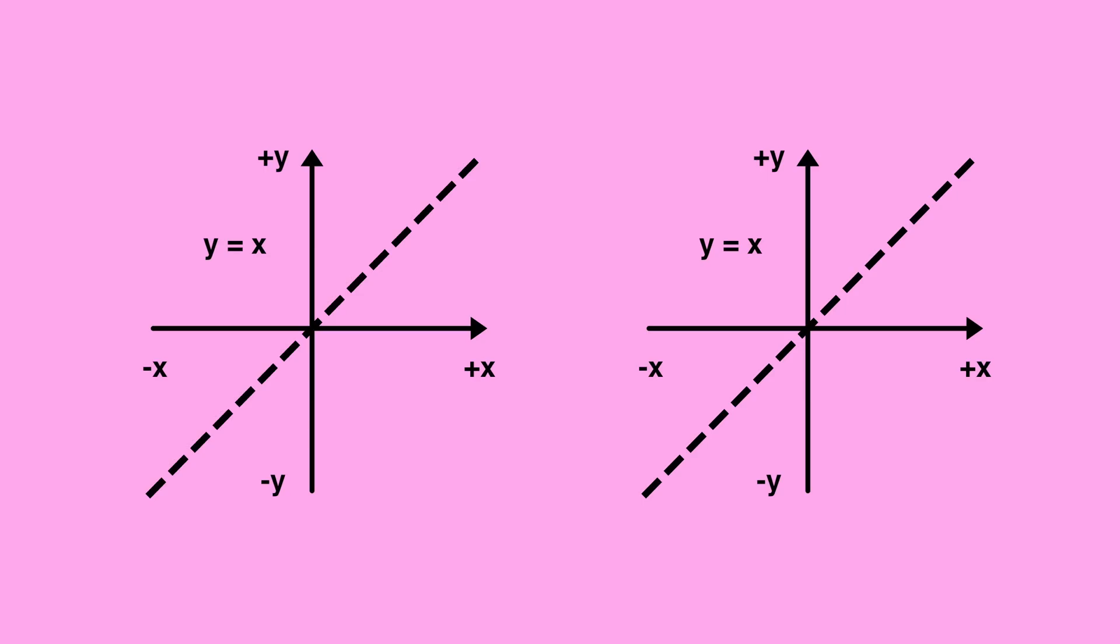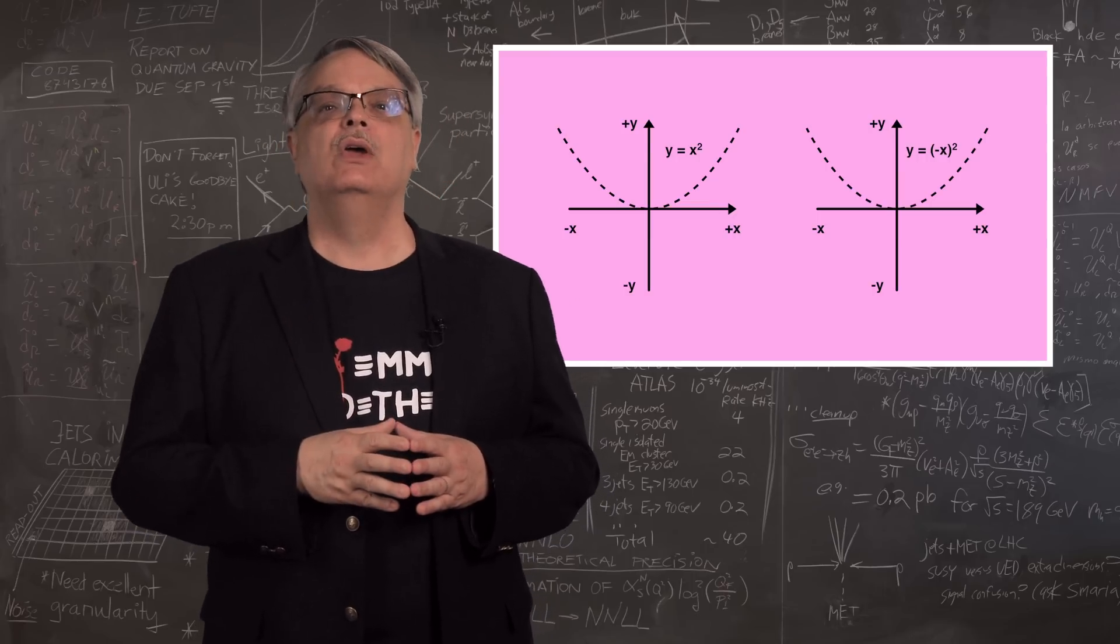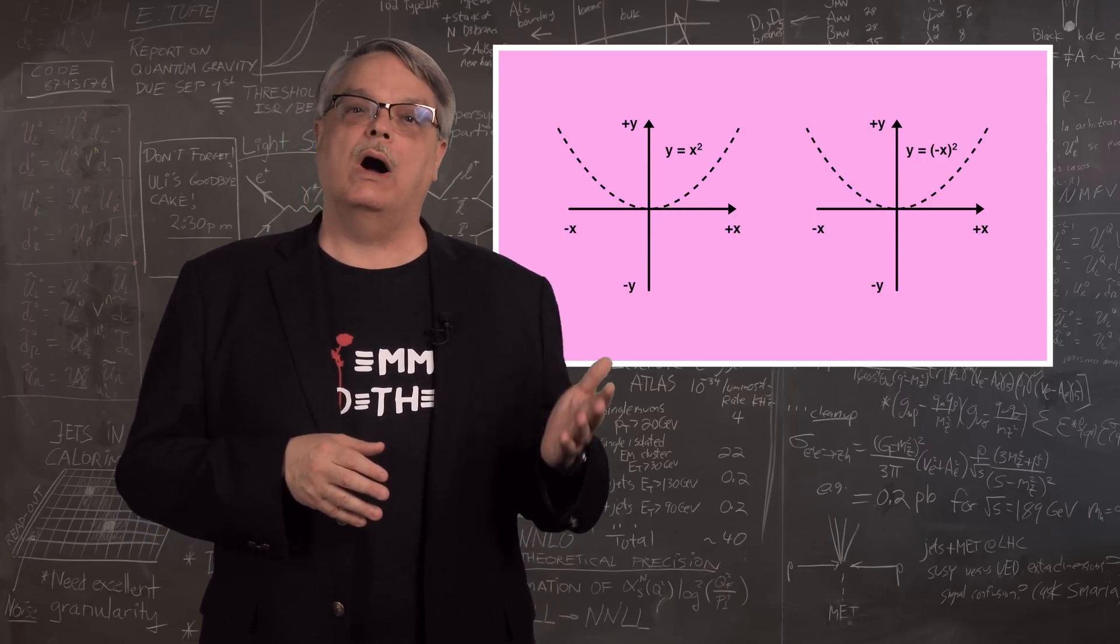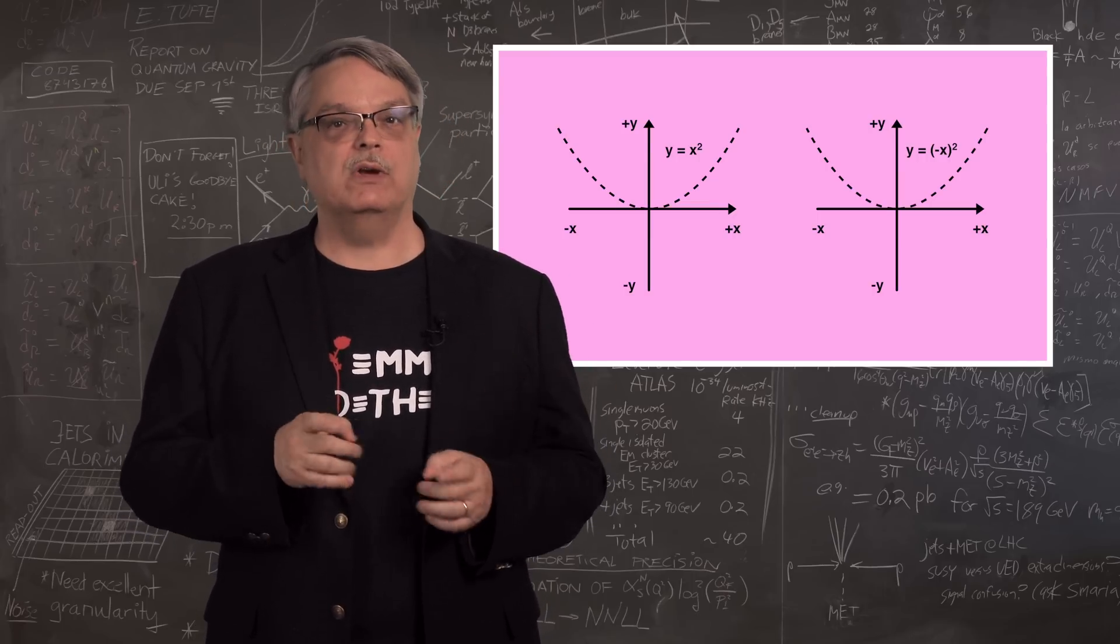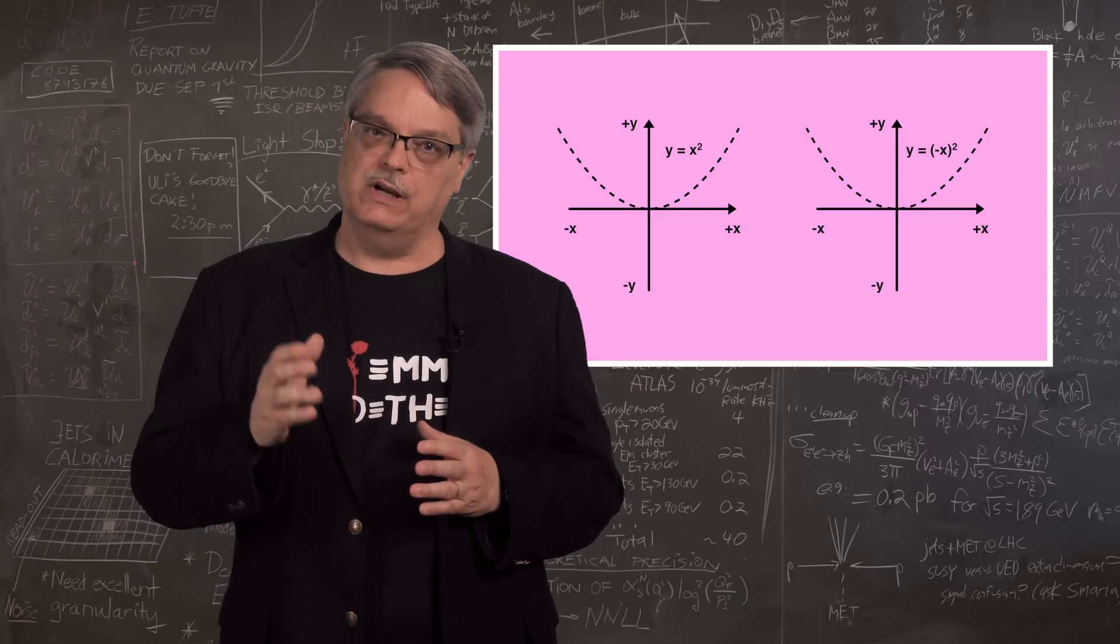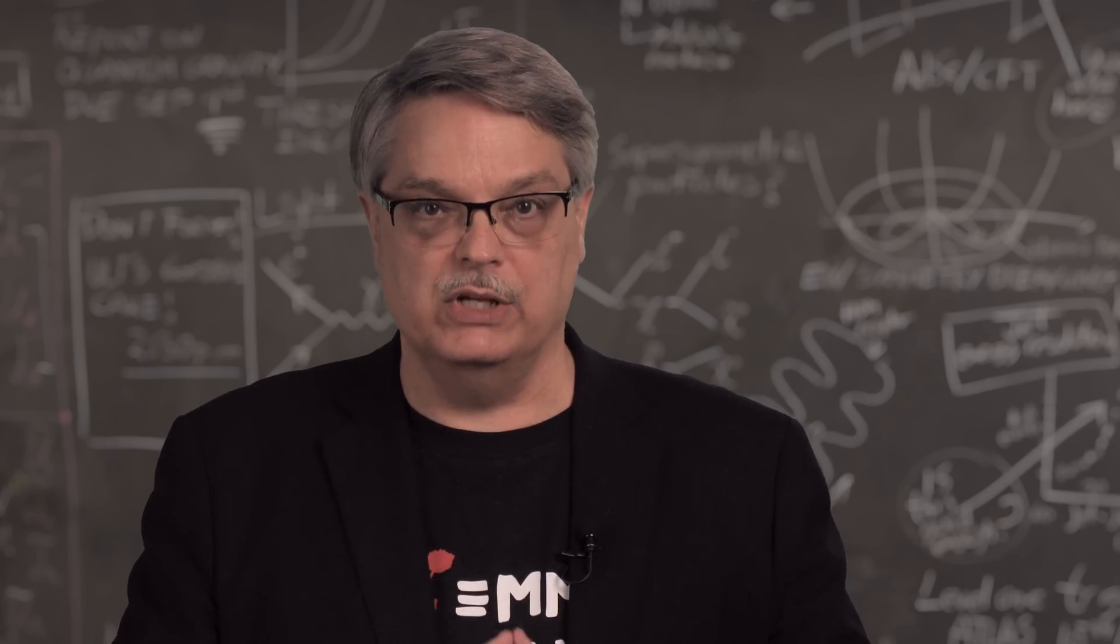For the equation y equals x, replacing x with minus x, which is the same as reflecting the line around the y-axis, we see that before and after the flip, the graphs look different. On the other hand, for the y equals x squared equation, flipping right and left makes no difference at all. In this case, we say that the equation y equals x squared is symmetric under flipping left and right.